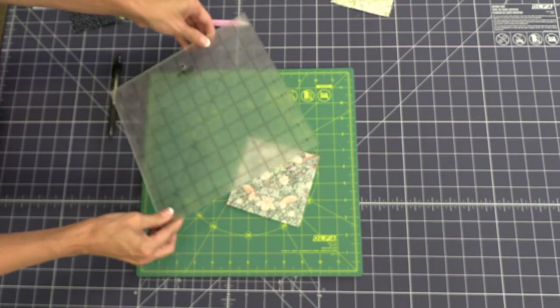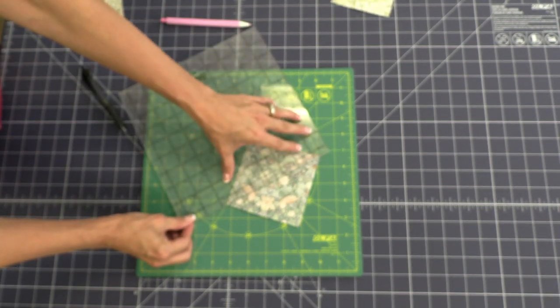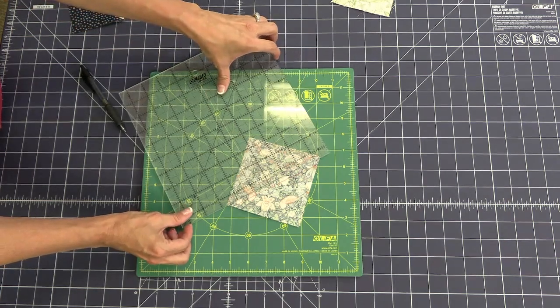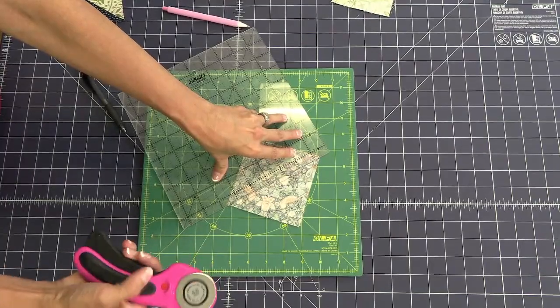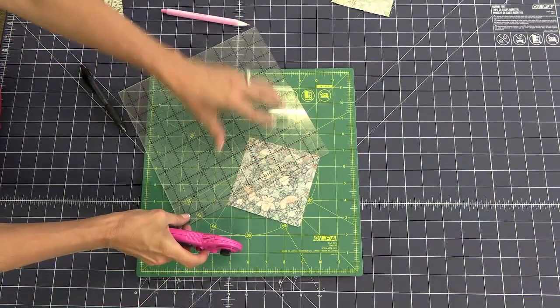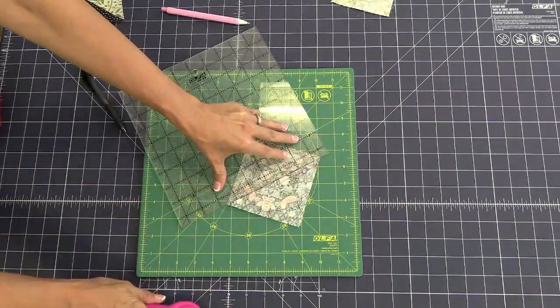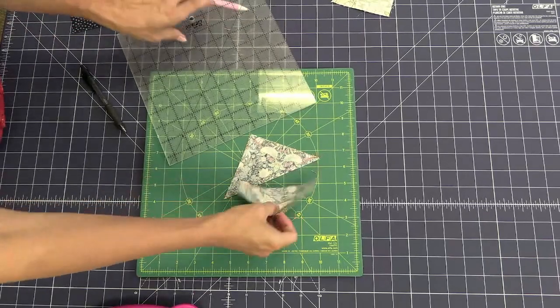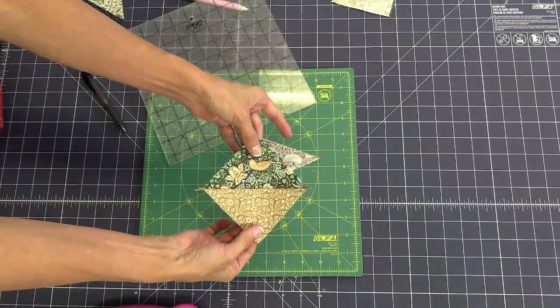So now what we're going to do is we're going to take our ruler and I'm just going to put it right on that line that I drew earlier. Take my rotary cutter, just line that up real well, and I'm just going to slice it in two. So now what we have is two half square triangles.